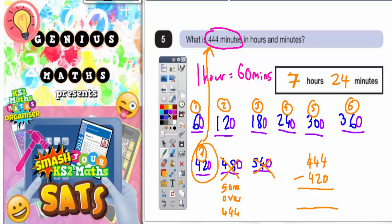Let's just check where that comes from. 4 takeaway 0 is 4, 4 takeaway 2 is 2, and 4 takeaway 4 is nothing. So we have got 24 minutes left.